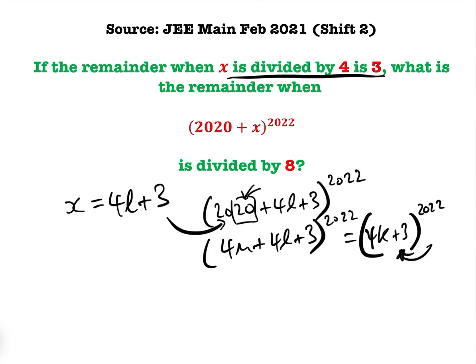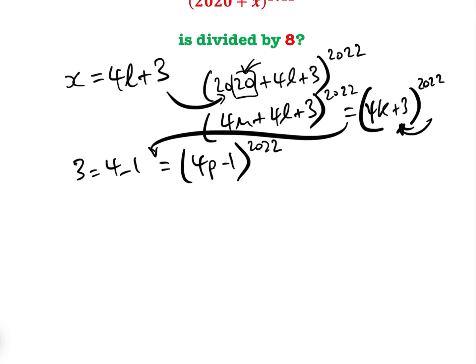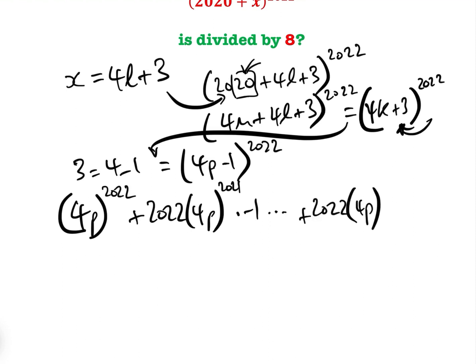Again, now we want to reduce that, if we can, to 1 or -1. And we know that 3 is 4 - 1. So therefore, we know that this expression here is (4p - 1)^2022. When we expand this, we have (4p)^2022, and again, you wouldn't actually have to do this in the test. Add 2022 × (4p)^2021 × (-1), and so on, add 2022 × 4p × (-1)^2021, then add (-1)^2022.